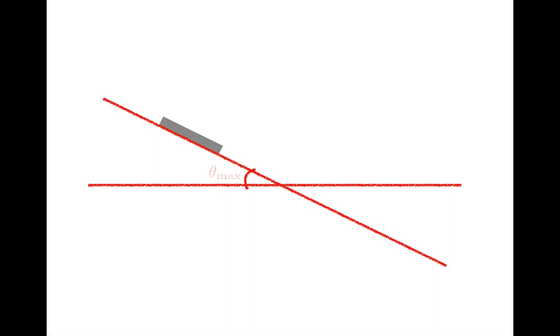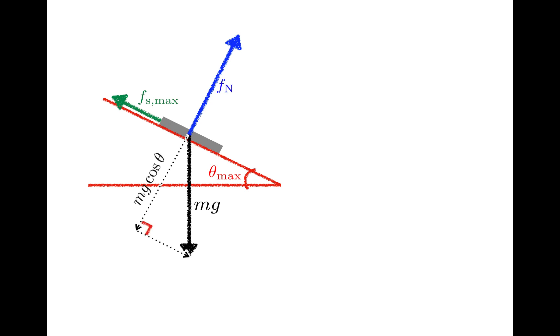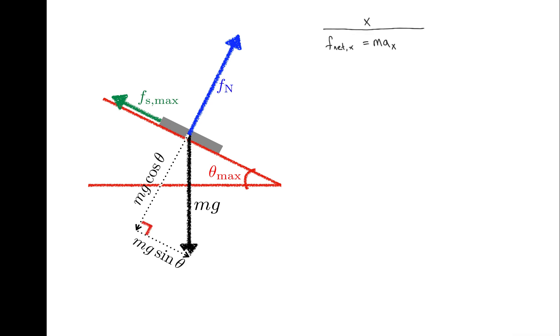Let's call that angle theta max, draw some forces, and see what we can learn about the angle. The forces acting on the book are going to be mg, the normal force, and now we'll also add a force of static friction. Here are the components of mg.